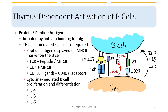CD40 ligand is related to TNF alpha. When this binding happens, it will drive B cell cycles and expression of B7, which is required for co-stimulation and interaction with CD28 on T cells. After all these interactions happen in this immunological synapse, cytokines will be released and secreted by TH2 helper cells — such as IL-4, IL-5, IL-6 — and activate the B cells. Then B cells will proliferate and differentiate.